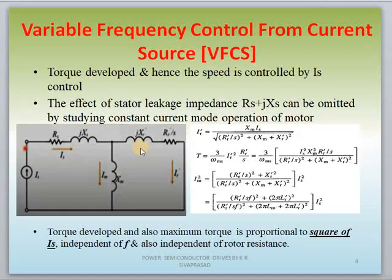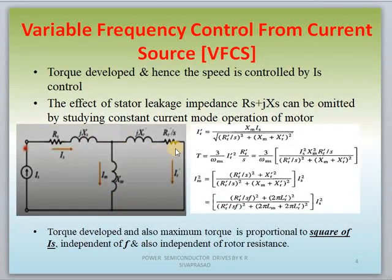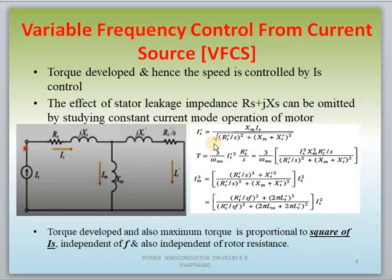By analyzing this circuit, we can easily identify that IM is maintaining constant because it is the flux producing component. We are trying to always maintain a constant flux, that means we are maintaining IM value constant. IR value depends upon the load connected to the induction motor. By analyzing the circuit, we can get the torque equations. Applying KCL for this circuit, IR' is nothing but XM·IS divided by the square root of (RA'/S)² plus (XM + XR')².